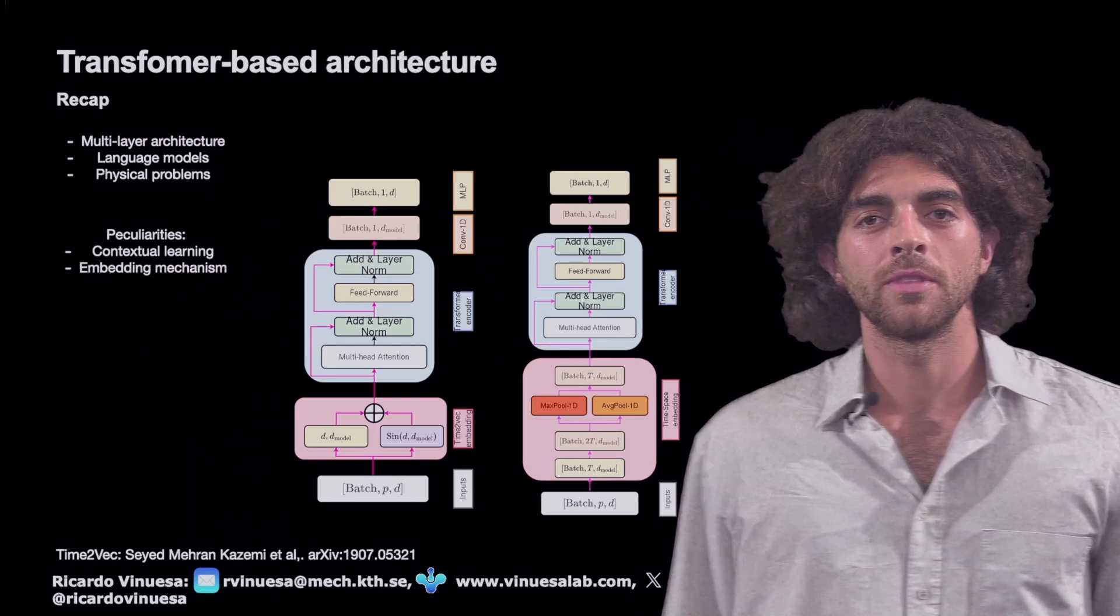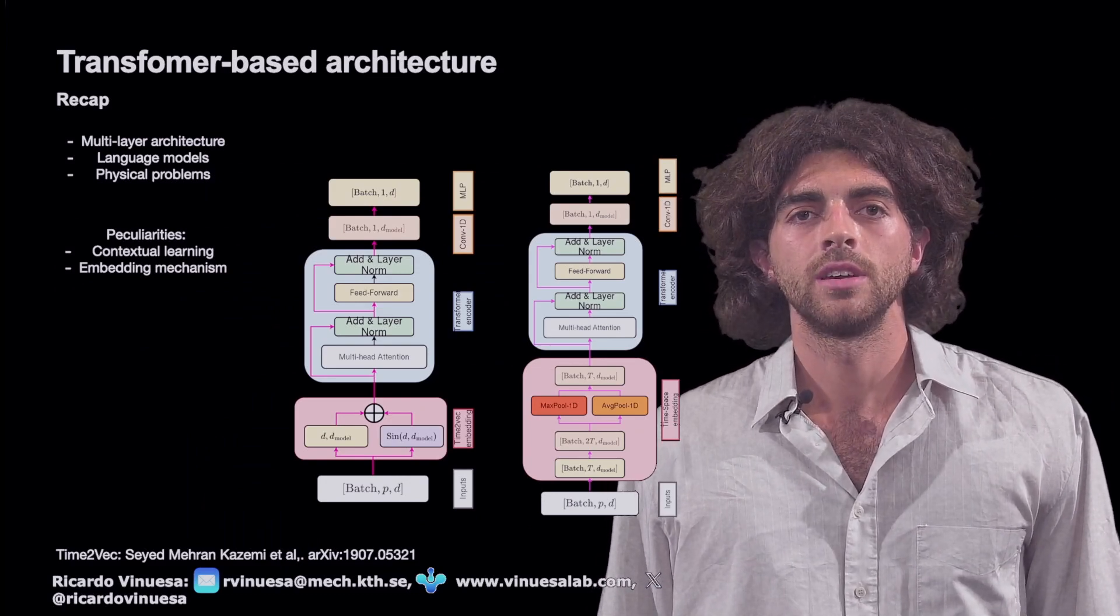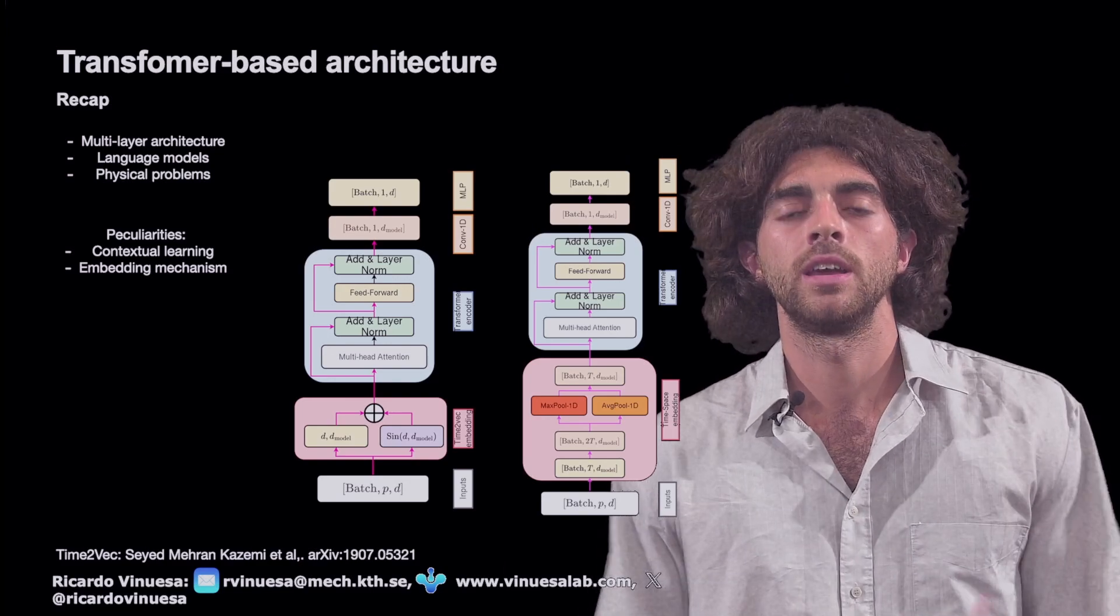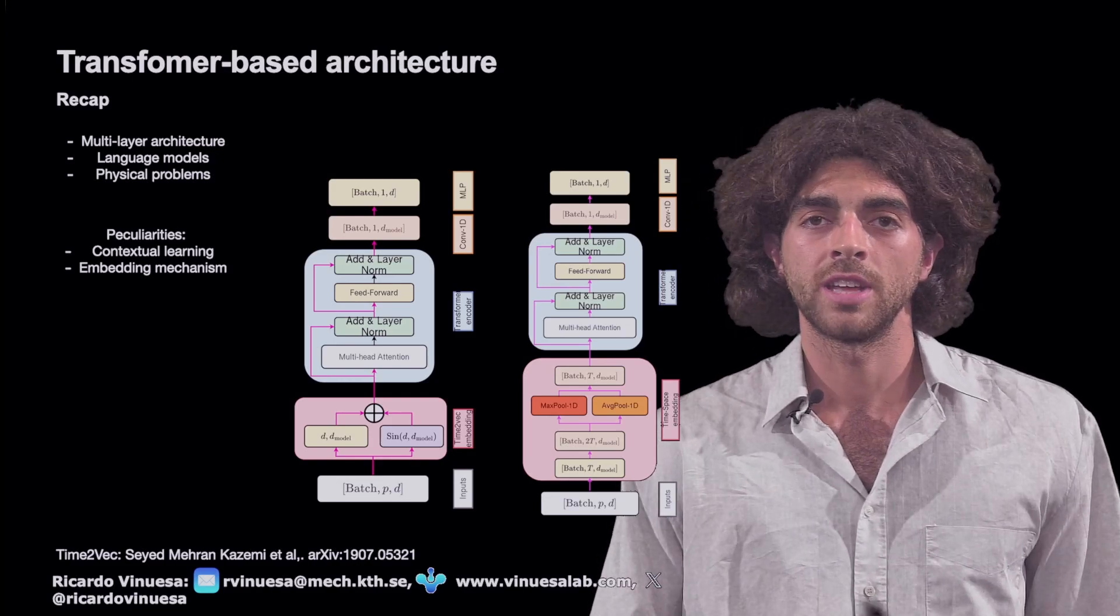First of all, let's do a recap from the video that we introduced in the past. In the first place we understood the transformer as a composite model which has different kinds of layers, from the MLP, to the convolutions, to the attention.